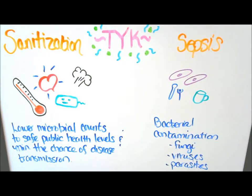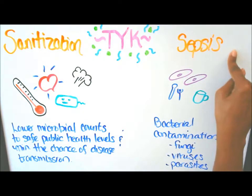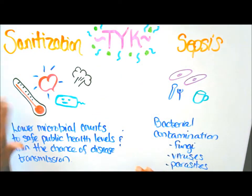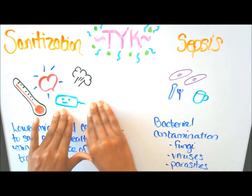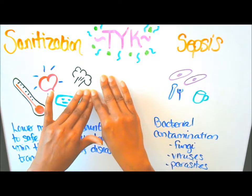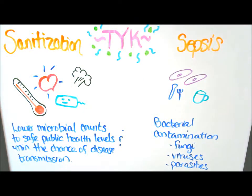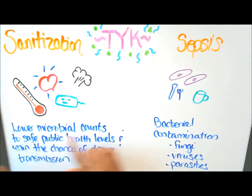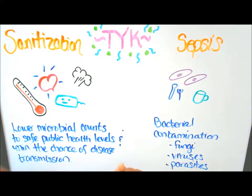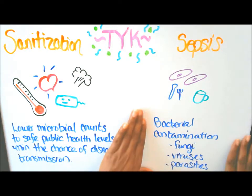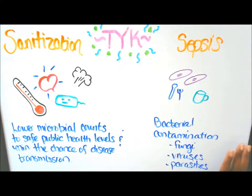This is the last set: sanitization and sepsis. Examples for sepsis include high temperature, fast heart rate, bacteria involvement, and difficulty breathing. The example for sanitization is dishes — plates, utensils, and cups. Definitions: 'lower microbial counts to safe public health levels and minimize the chance of disease transmission' matches sanitization, and 'bacterial contamination, also involving fungi, viruses, and parasites' matches sepsis.